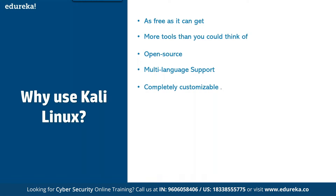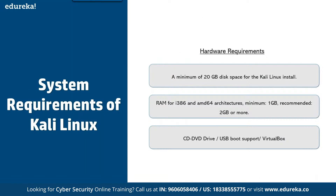Kali Linux also includes multi-language support, allowing users to operate in their native language and locate the tools they need. It is completely customizable — used by developers at Offensive Security to replicate scenarios and find weaknesses. Linux is always the first preference for ethical hackers, and Kali Linux is the first choice because all tools are pre-installed. The system requirements are an i3, AMD, or compatible processor, minimum 20 GB hard drive, and minimum 1 GB RAM.